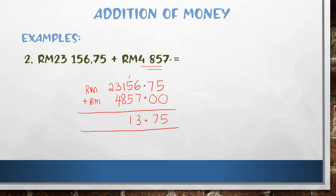Working through the columns: thirteen, eleven, ten, eight, two. The answer is twenty-eight thousand and thirteen ringgit seventy-five sen. For the pronunciation of money — how to spell money — you write RM only, then do not write sen.